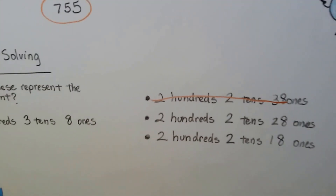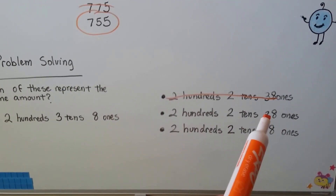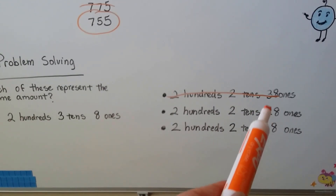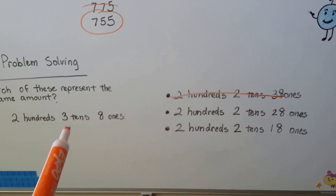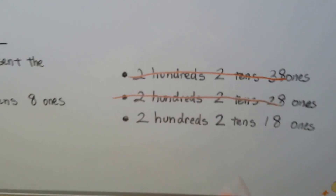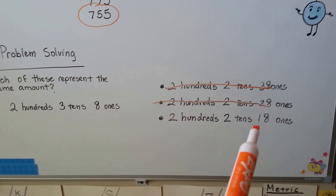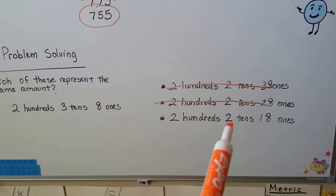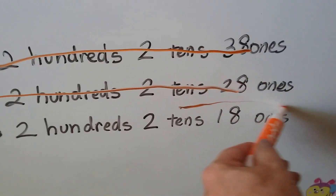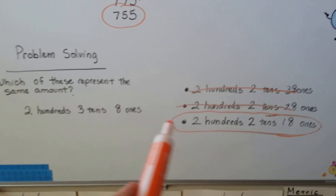Another choice has two hundreds, two tens, and twenty-eight ones. If we regroup the tens from the ones place, two tens plus two tens is four tens — we're supposed to have three tens, so that doesn't work either. The last choice has two hundreds, two tens, and eighteen ones. If we move one ten to the tens place, that makes three tens and eight ones — that's 238! These just weren't regrouped yet, but they represent the same amount.